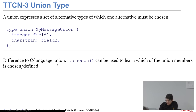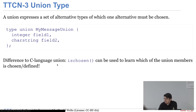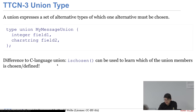Es gibt natürlich auch eine Union, wo man wahlweise Feld 1 oder Feld 2 ausdrücken kann – entweder einen Integer oder einen Charstring. Ein Unterschied für Leute aus der Low-Level-C-Entwicklung: Man braucht keine explizite Annotation, welche der beiden Alternativen gewählt wurde – das ist inhärent dabei. Es gibt eine is-chosen-Built-in-Function, mit der man prüfen kann, welches Feld in der Union gewählt wurde.